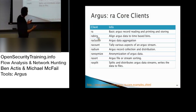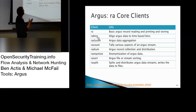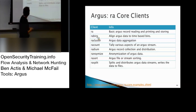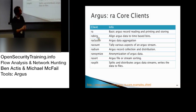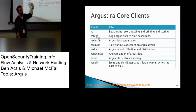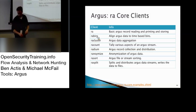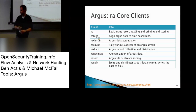RA cluster does data aggregating. RA count tallies various aspects of an Argos stream. Then there's Argos records collection and distribution. They have an anonymized one, which is really neat — so if you want to take some data and anonymize it for distribution purposes. Silk also has an anonymization tool where it'll go in and randomize your IPs, and we did that with the data we supplied.